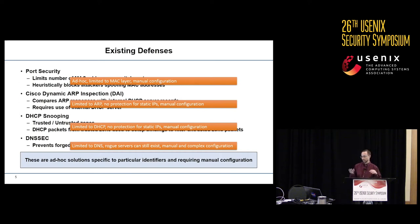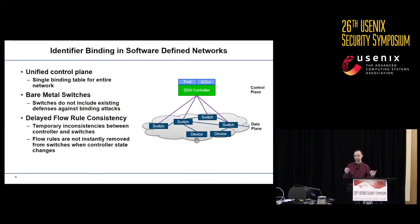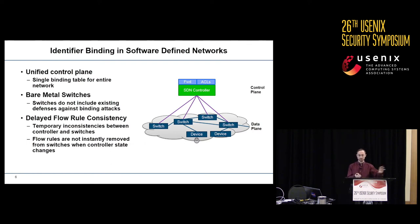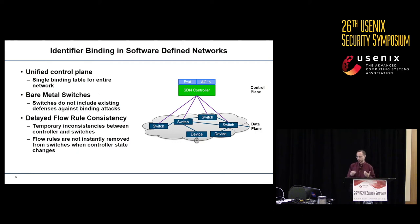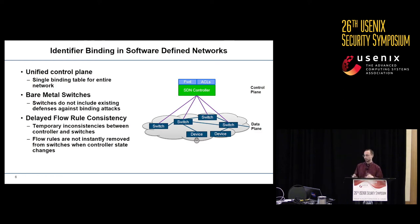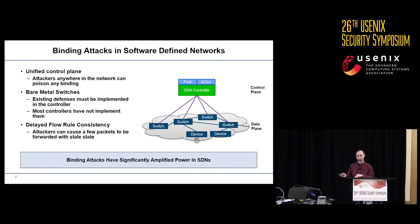In this work, we're not just interested in traditional networks, but particularly in how identifier binding changes in software-defined networks. SDN has a number of characteristics that influence this. The unified control plane means there's typically a single binding table for the entire network — a single ARP table instead of one in each layer-2 switch, a single forwarding table instead of one in each router. SDN also uses very simple bare metal switches that don't include any of these existing defenses against binding attacks. Finally, SDNs often exhibit delayed flow rule consistency, where there are temporary inconsistencies between the controller's forwarding state and the flow rules in the switches.